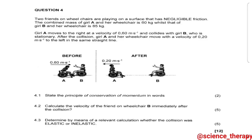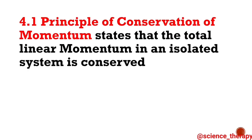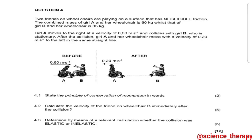So now we are given Question 4. Remember the approach is: you have to check if there are any definitions that you can see, and you run straight to the definitions and write them first before you forget them. We have a definition in 4.1 — it says state the principle of conservation of momentum. The principle of conservation of momentum states that the total linear momentum in an isolated system is conserved, or remains constant.